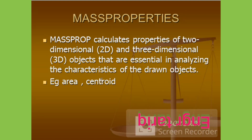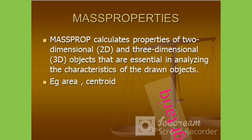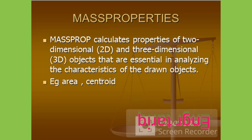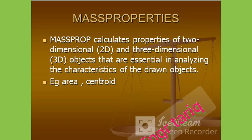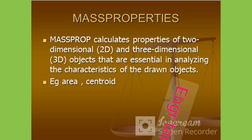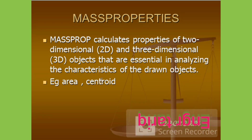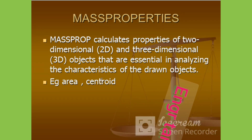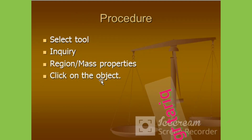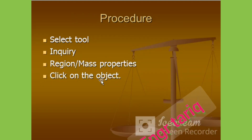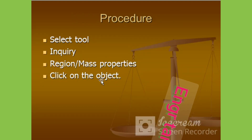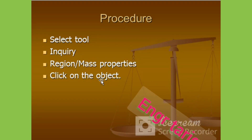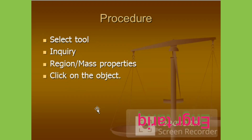This is called mass properties. Mass properties calculate the properties of two-dimensional 2D and three-dimensional 3D objects that are essential in analyzing the characteristics of the drawn objects, for example area or centroid. The procedure: select tool, inquire, region or mass properties, and select object.